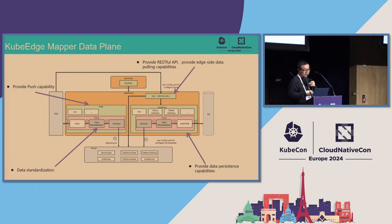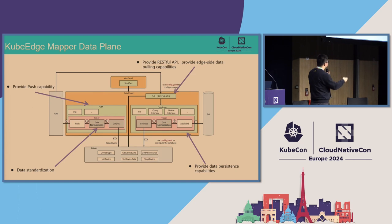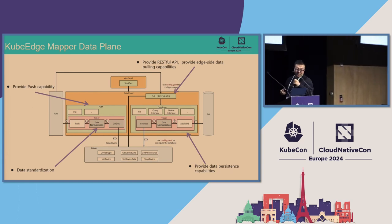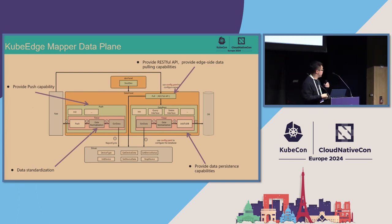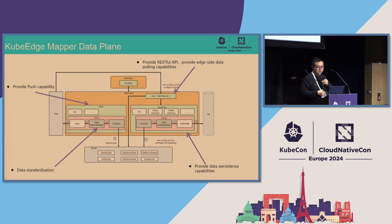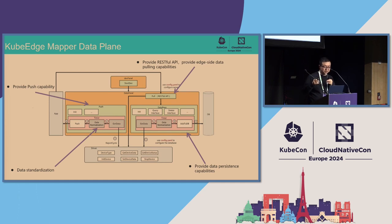The Mapper processes data from the device driver through the data plane, which does data processing and provides push capability to databases and other applications. We also provide a REST API so users can pull data from edge devices. KubeEdge only collects data from the devices — if you want more processing, you need to do that in your own application.